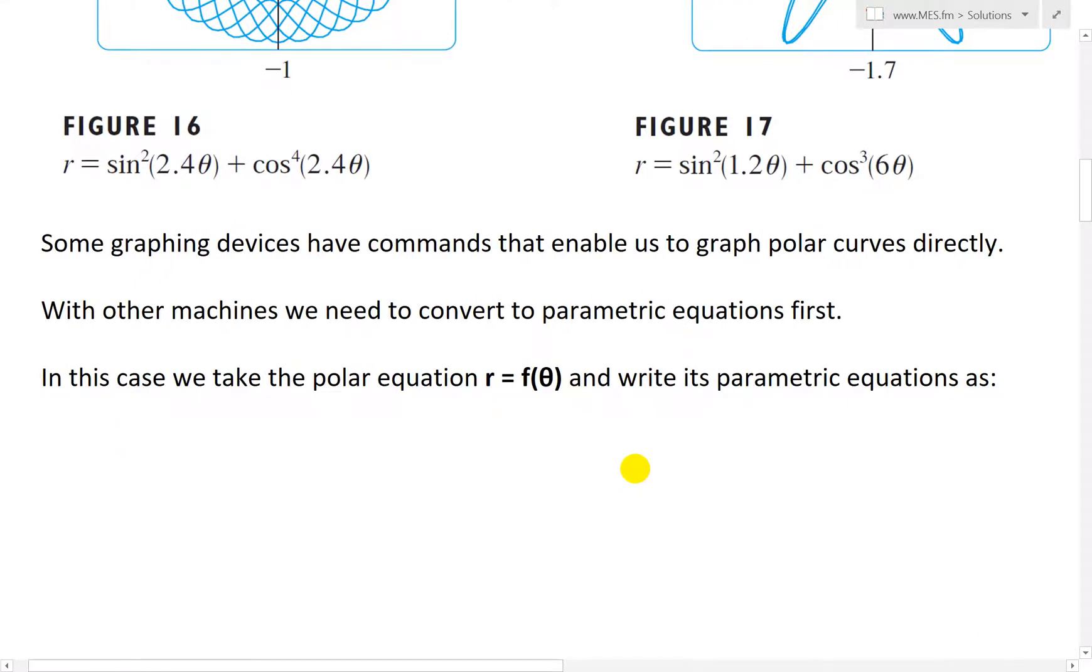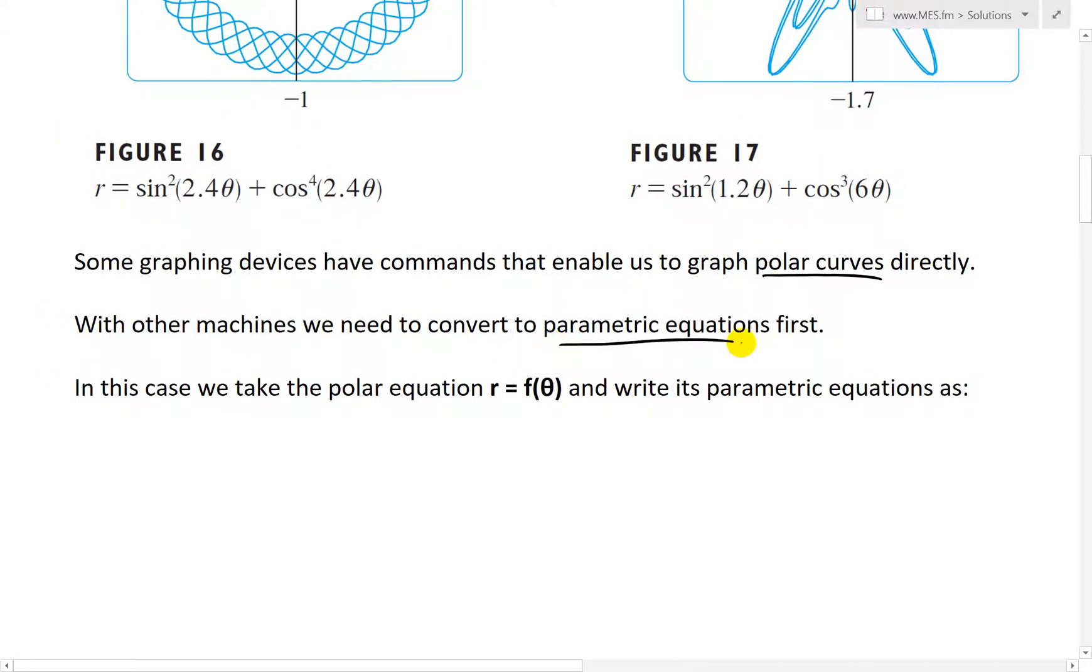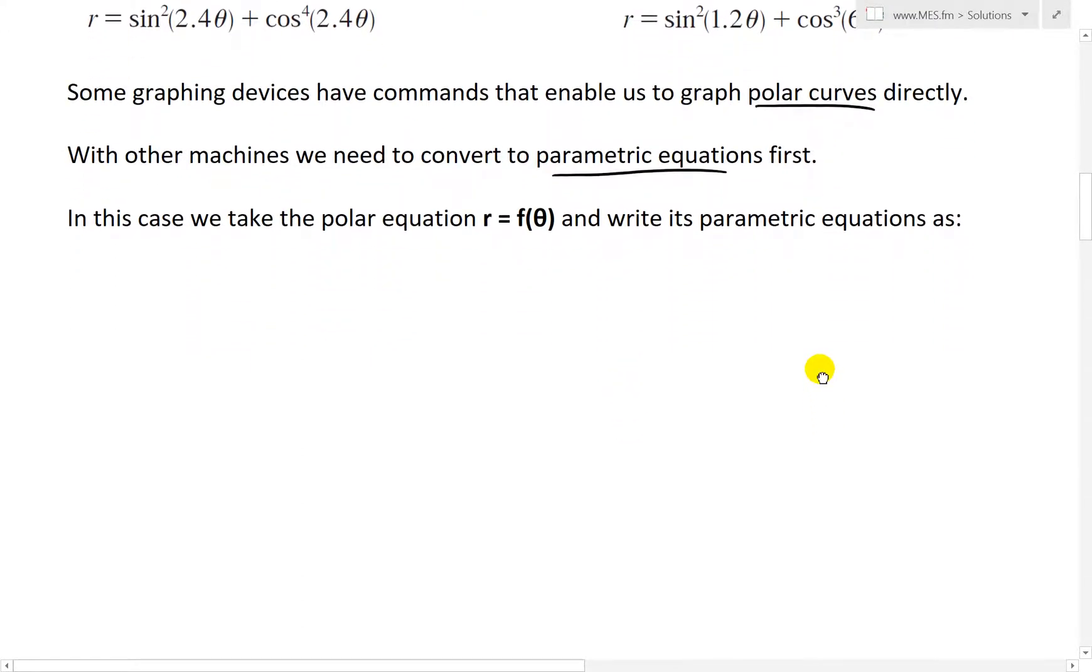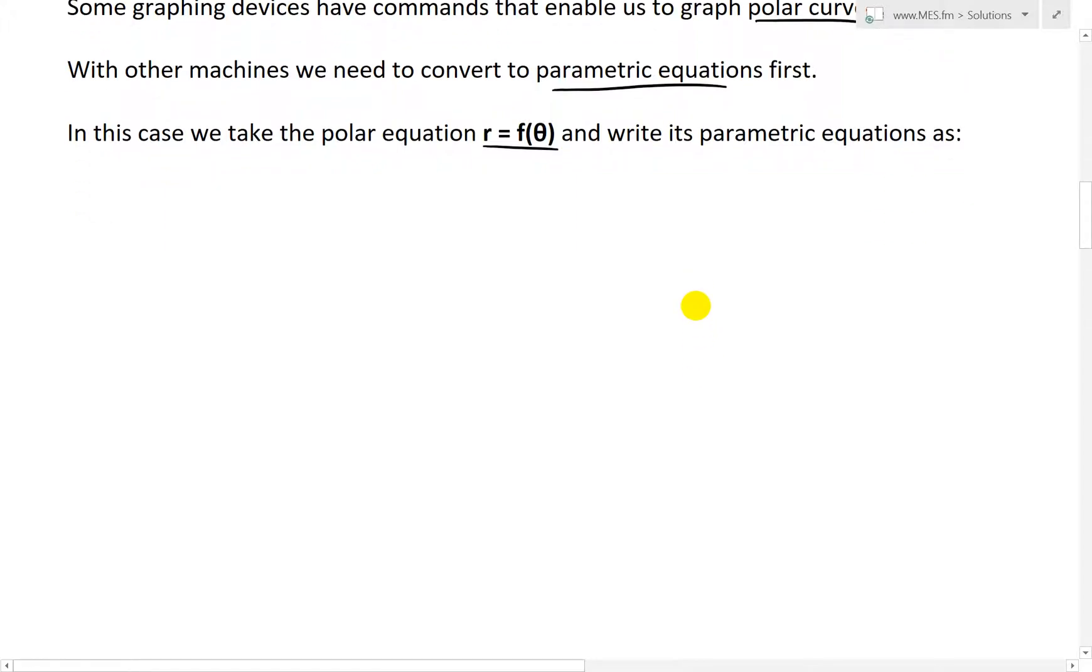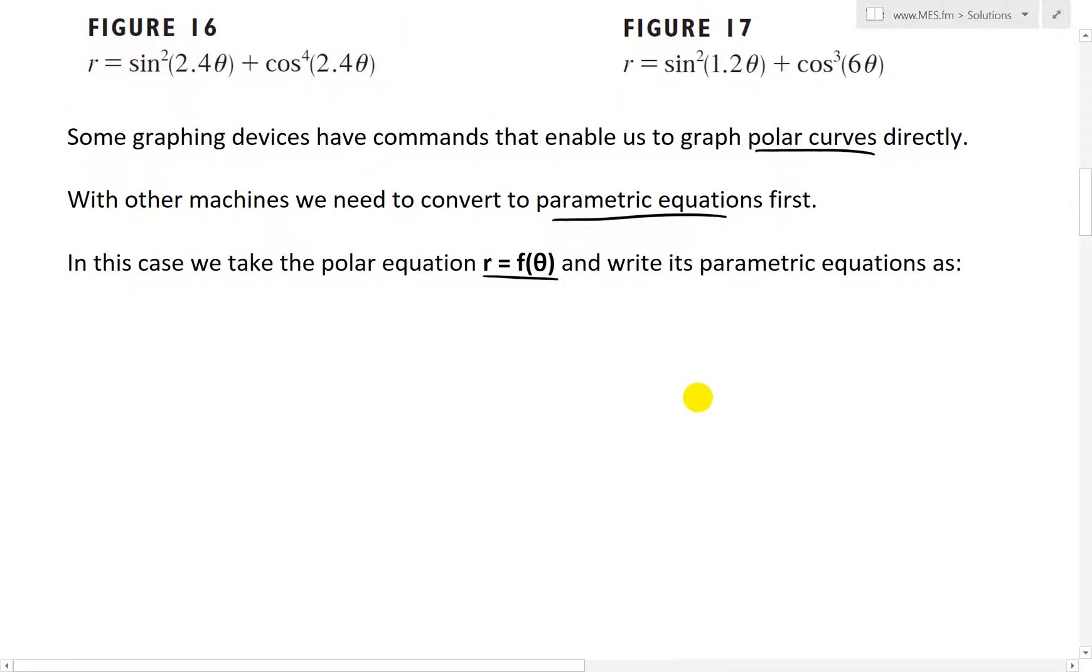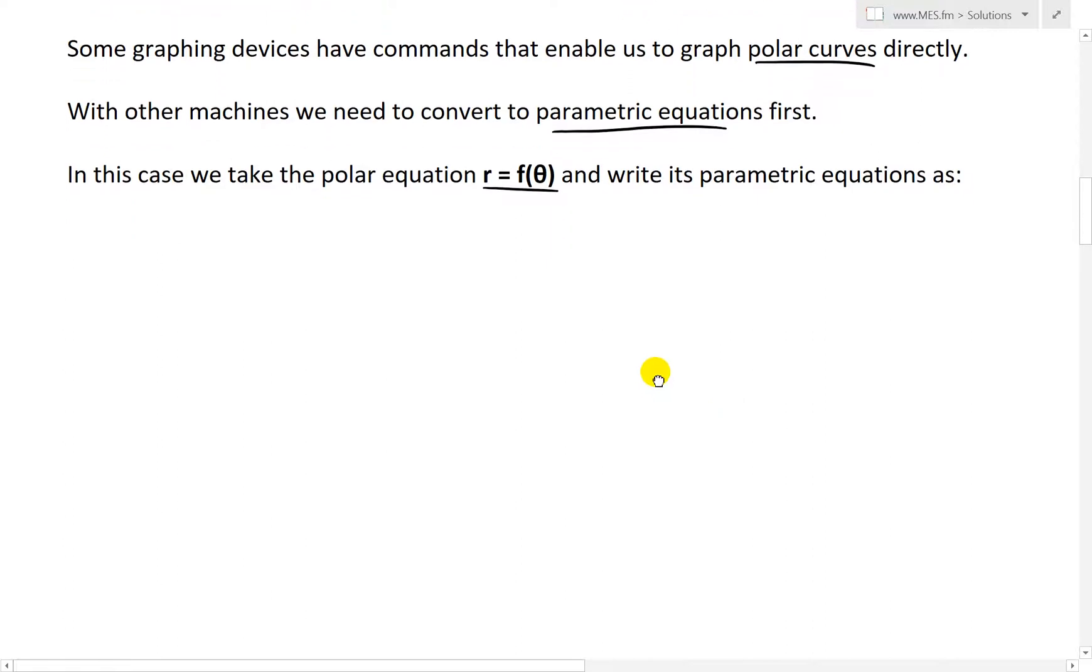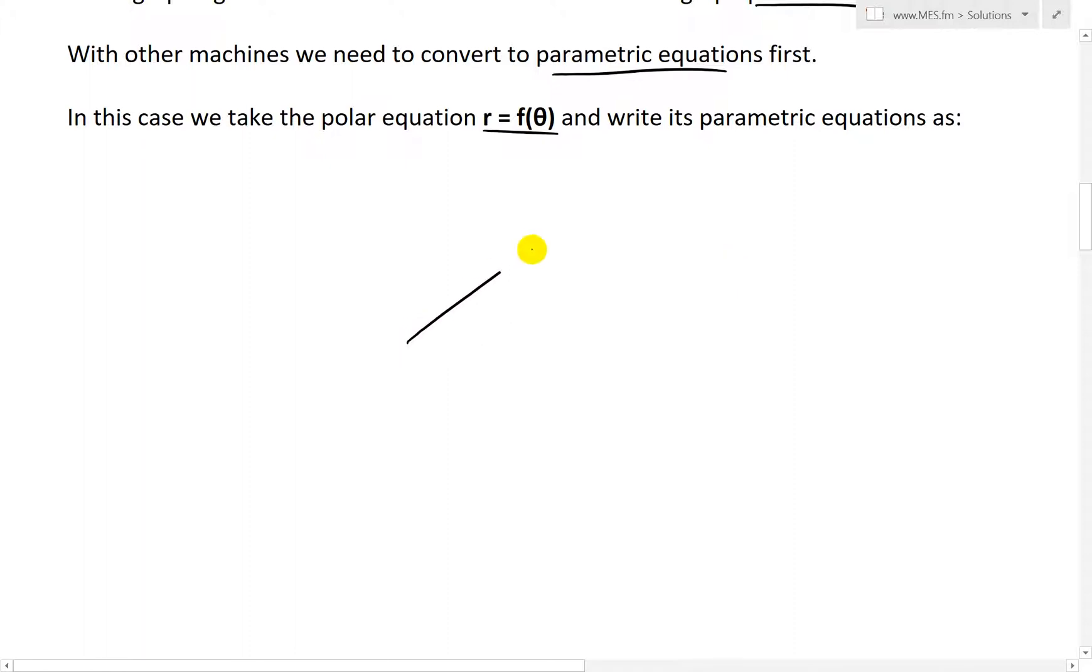Some graphing devices have commands that enable us to graph polar curves directly. With other machines, we need to convert to parametric equations first. The Desmos calculator can do it in both polar or parametric equations, but I'll show both just for completeness. In this case, we take the polar equation R equals F of theta and write its parametric equations. Just as a refresher, if this is the polar axis, theta is the angle, this is the origin, and this distance is R, then we have the coordinates R, theta.